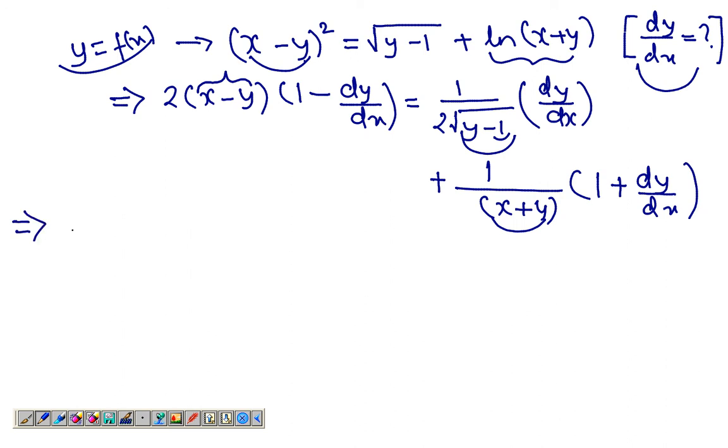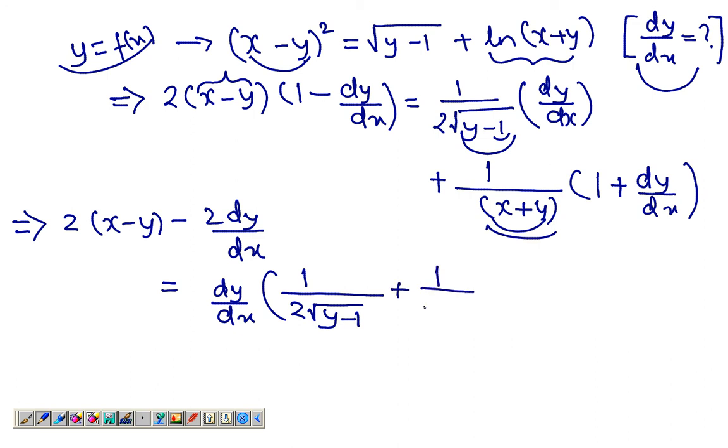Let's simplify this a bit. Opening the brackets, I get 2(x - y) take away 2 dy/dx equal to dy/dx times 1 over 2√(y - 1) plus 1 over (x + y) from here, plus 1 over (x + y).